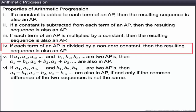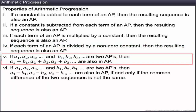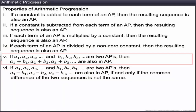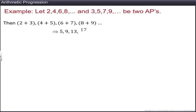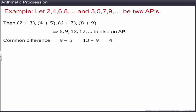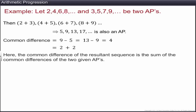If the corresponding terms of two arithmetic progressions are added, the resulting sequence is also an AP. For example, adding 2, 4, 6, 8, … and 3, 5, 7, 9, … term by term gives 5, 9, 13, 17, …, which is an AP. The common difference of the result is the sum of the common differences of the two given APs. Similarly, if corresponding terms are subtracted, the result is also an AP, provided the common differences of the two sequences are not equal.